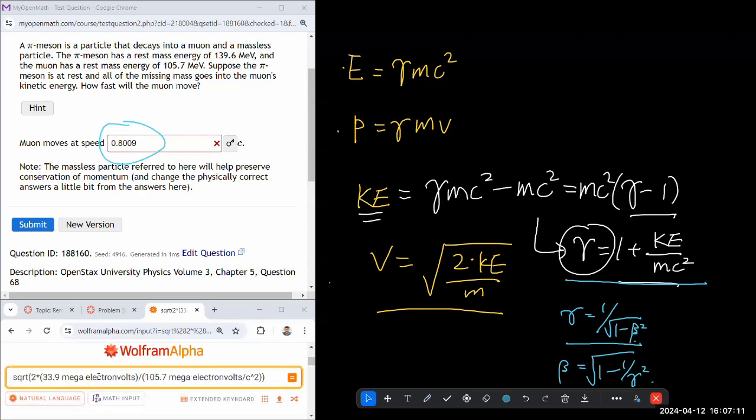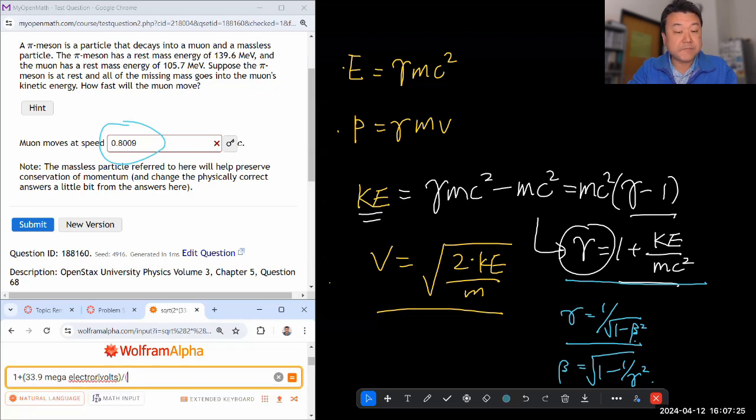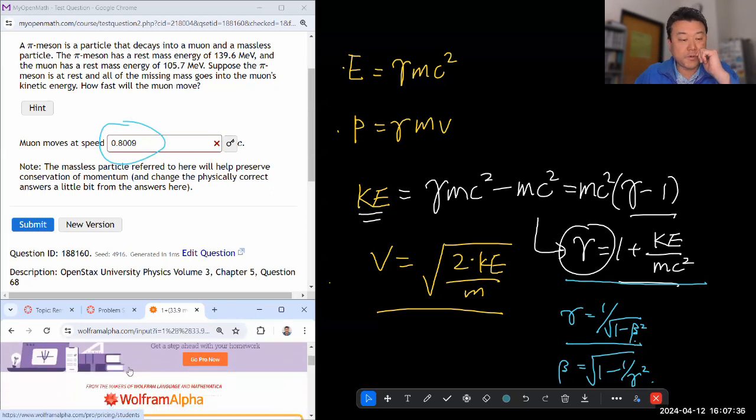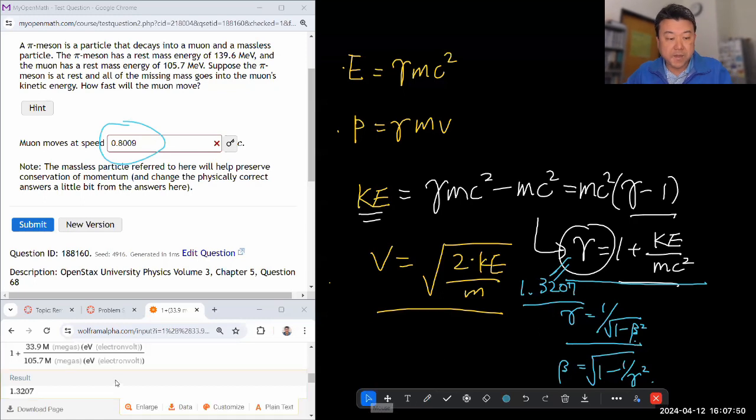So gamma equals 1 plus the kinetic energy, which was 33.9 mega electron volts divided by the mc squared. That's just going to be 105.7 mega electron volts. Oh right, they'll cancel out. You don't even need those units. So let's look. That's going to be 1.3 something, 1.3207. That's my gamma. Let me just write it down so I don't forget. Gamma is 1.3207.